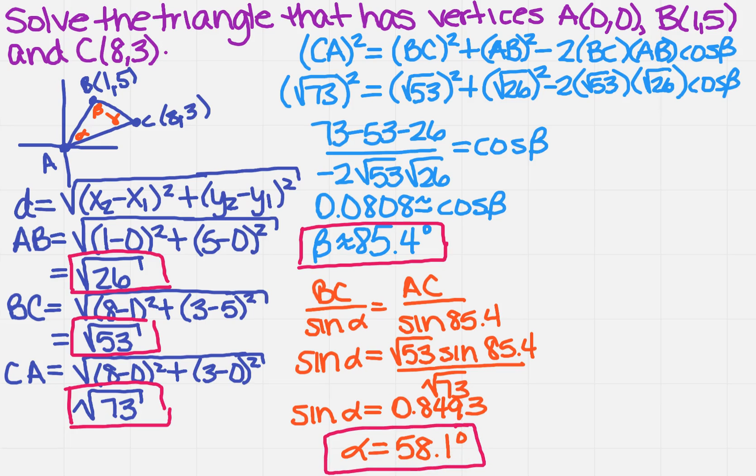Now, the only thing I have left to find, I've got my sides, I've got two of my angles, is the final angle. And if you recall, gamma will equal 180 minus what we got for alpha, 58.1, minus what we got for beta, 85.4. So gamma is going to equal 36.5 degrees.